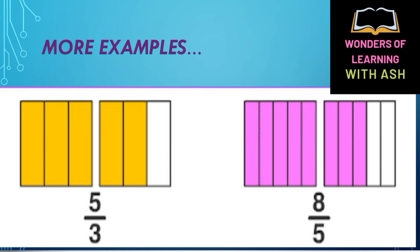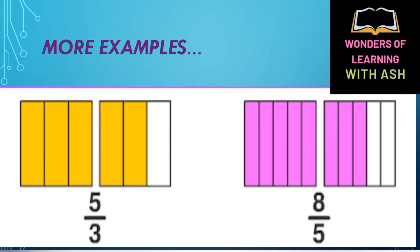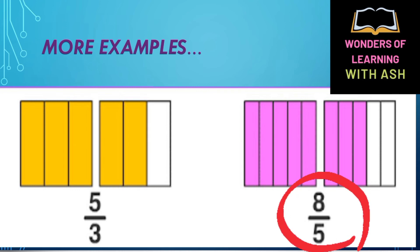Five parts are shaded in total across both squares. Our denominator is 3 because each square is divided into 3 parts. So this is 5 by 3 — wait, the total shaded parts are 8 and the denominator is 5, so this is eight-fifths, which is 8 by 5. This is an improper fraction.